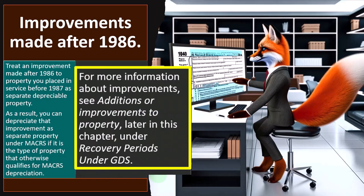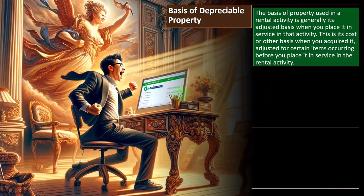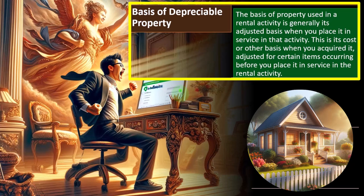For more on improvements, see 'Additions or Improvements to Property' later in this chapter under Recovery Periods under GDS. Basis of depreciable property: the basis is like adjusted cost — potential energy or potential deduction. You paid for it but weren't allowed an upfront deduction on a cash basis; instead you leak out that potential deduction over time through depreciation. The basis goes down as you consume the benefit. The basis of property used in a rental activity is generally its adjusted basis when you place it in service.